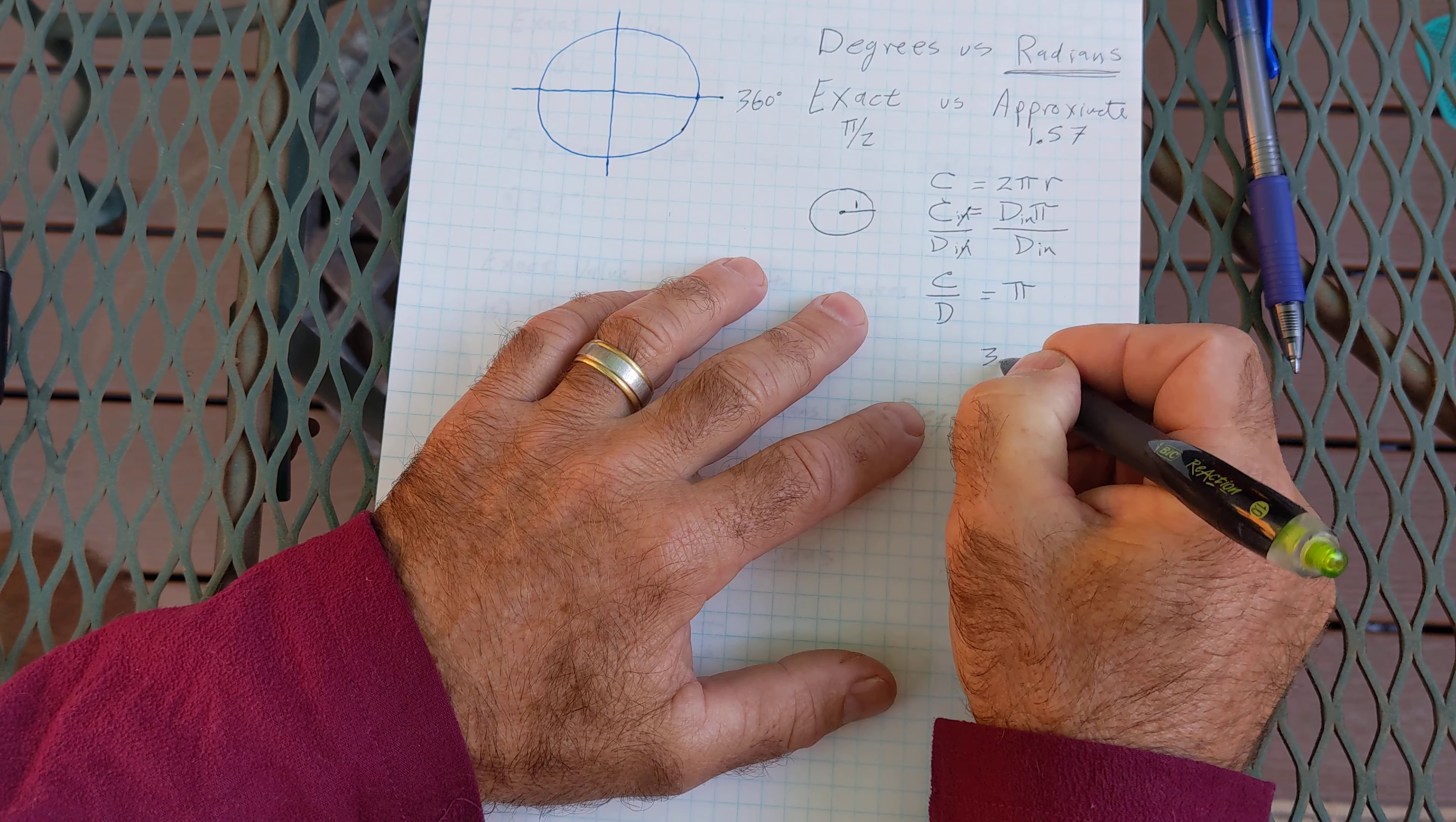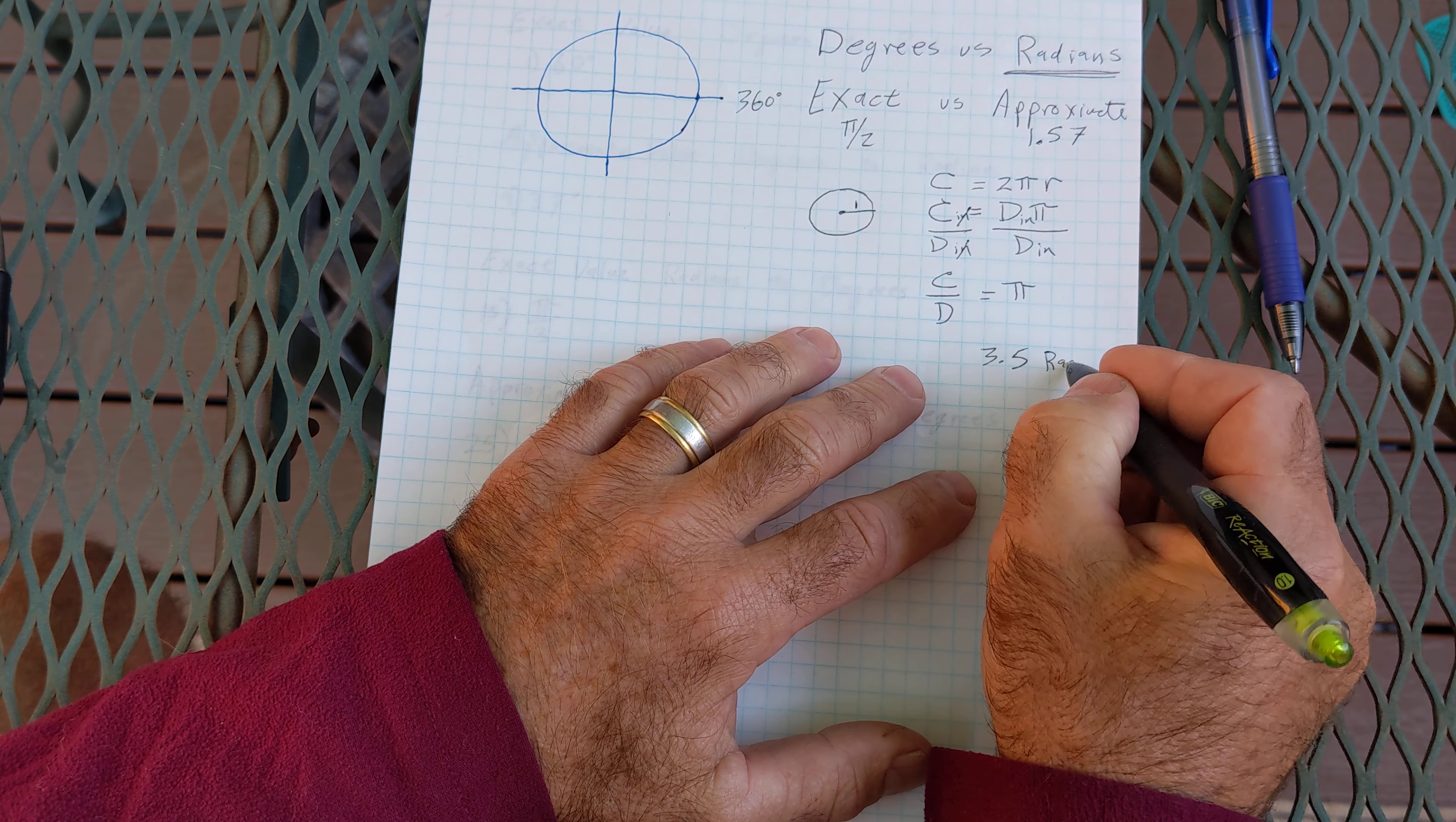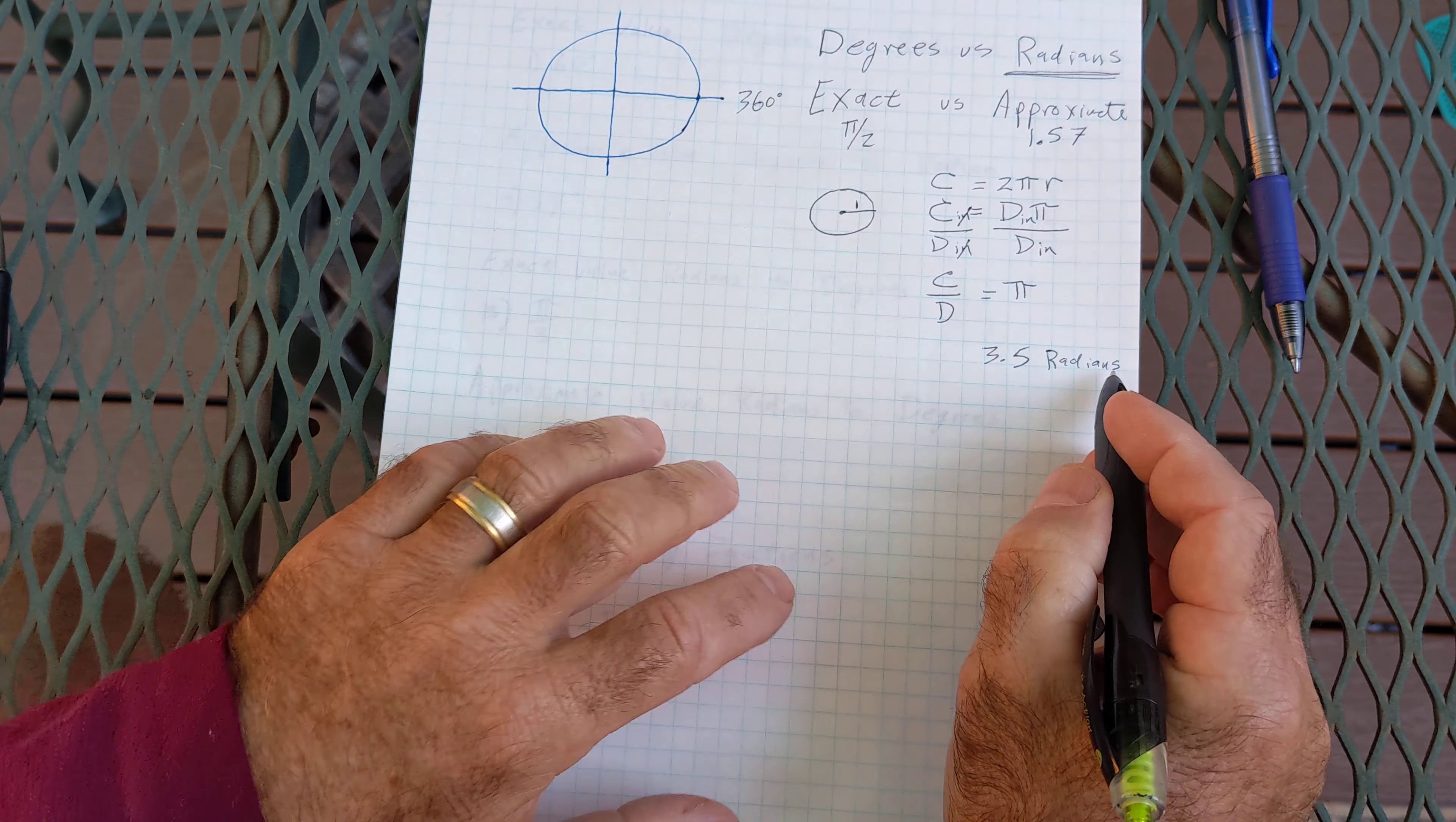So pi or radian measures have no units because they cancel right here and it's unitless. So if I have a number like 3.5 and it's in radians I don't have to write any radians here because they're actually unitless. I sometimes do write rad or radians but I only do that as a placeholder. So that's where radians are from.